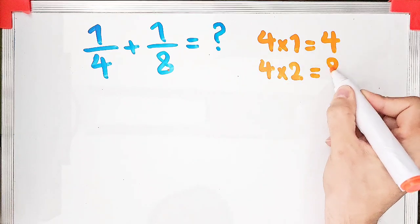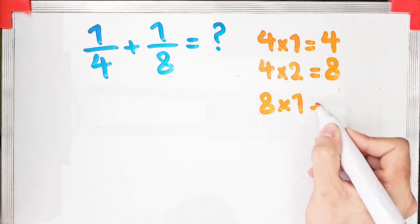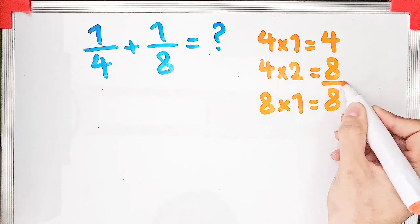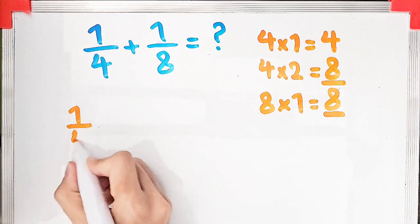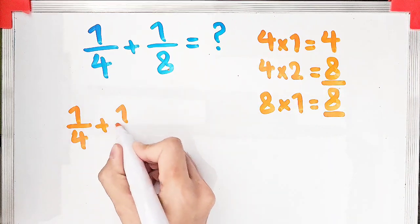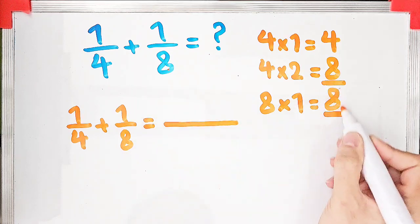The least common denominator is the smallest number that four and eight can divide into. The LCD, or the least common denominator of four and eight, is eight, because eight is the smallest number that both four and eight divide evenly into.